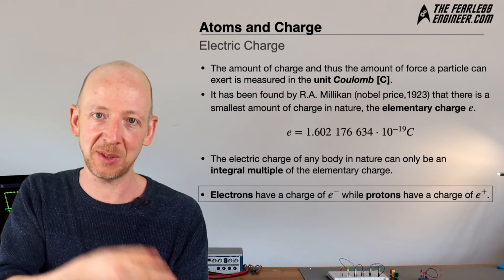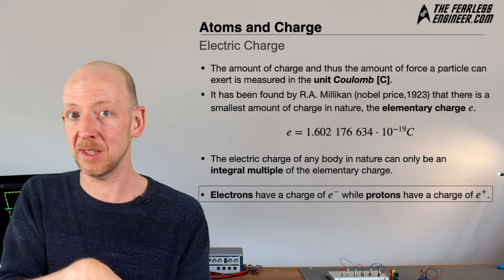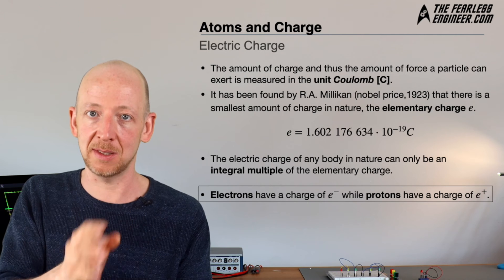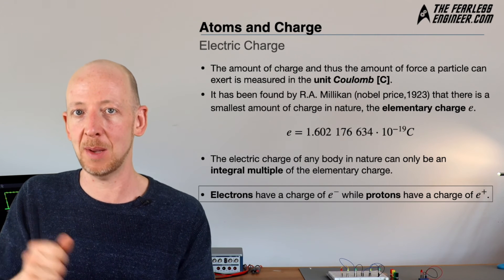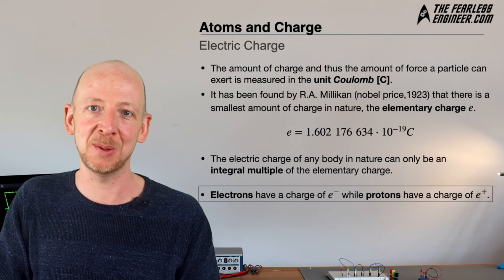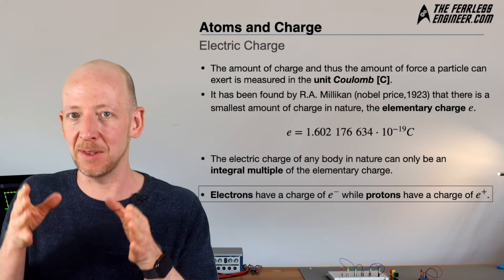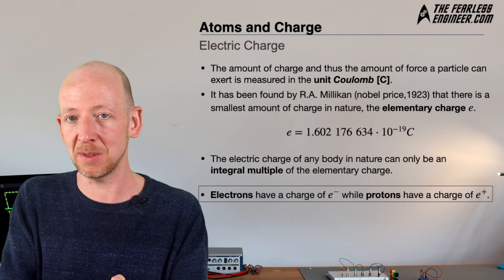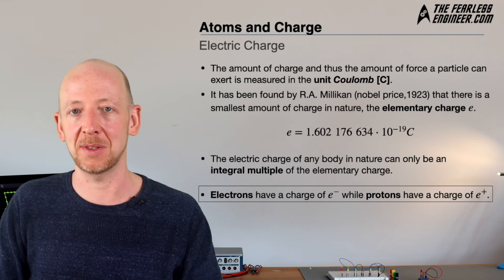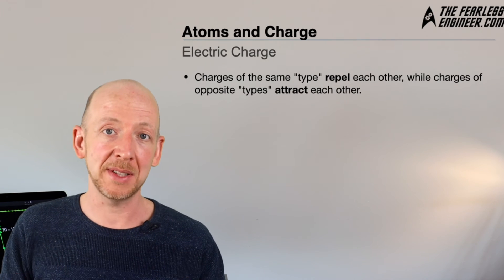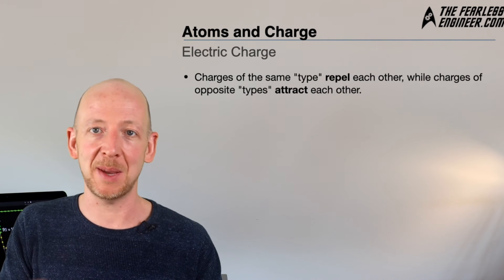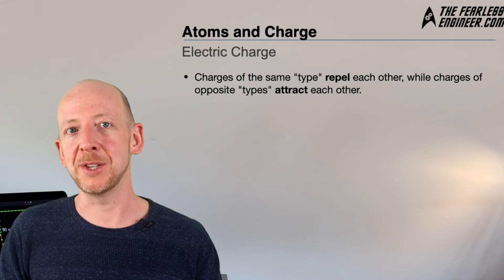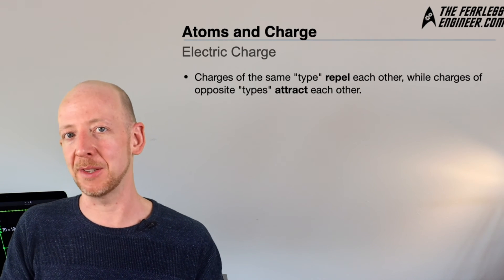If we look at atoms again, electrons have a charge of e minus: minus 1.602 times 10 to the power of minus 19 Coulomb. Protons have the same absolute charge amount but with a positive sign. Very early on in science, it was found that charges of the same type repel each other, while charges of opposite types attract each other.